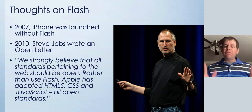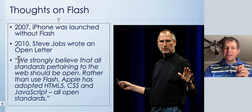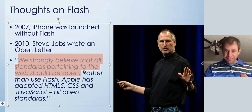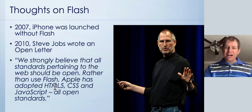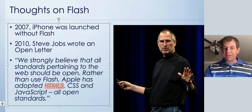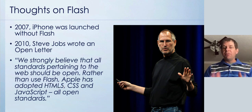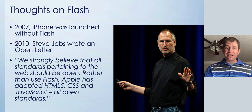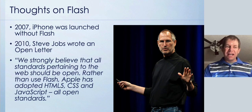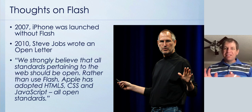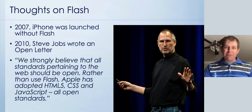In his Thoughts on Flash, Steve Jobs said: 'We strongly believe that all standards pertaining to the web should be open.' Rather than use Flash — which was a proprietary technology by Adobe, who had bought Macromedia — Apple adopted HTML5. This was back in 2007, and they were already talking about HTML5, CSS, and JavaScript, all open standards which the internet today still relies on. The launch of the iPhone and mobile phones in general meant companies didn't want people installing plugins just to watch video or interact on the web.